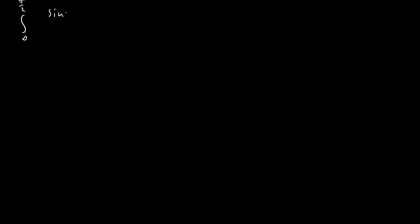The first thing we notice here is that we're probably going to have to use King's property because this is just ripe for some nice little substitutions. The first step we're going to do is use King's property, which basically just means u equals pi over 2 minus x.